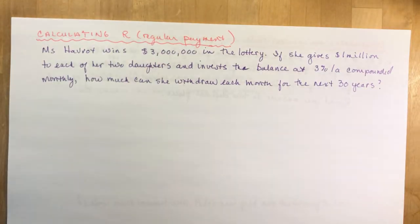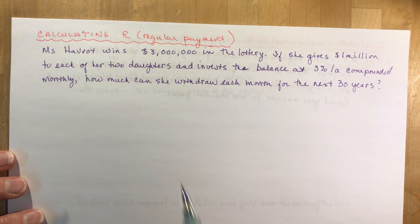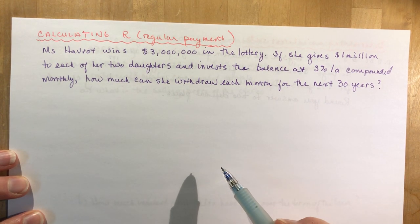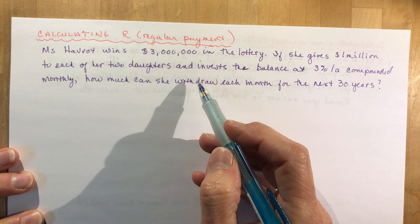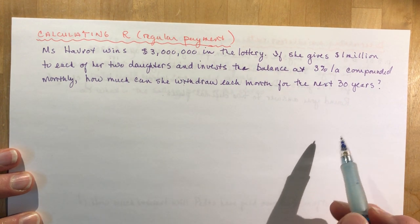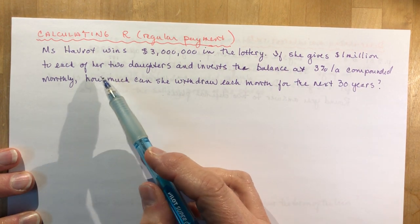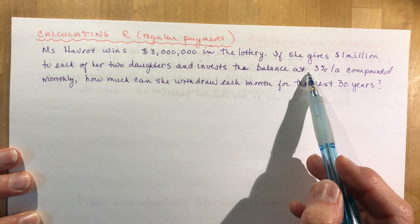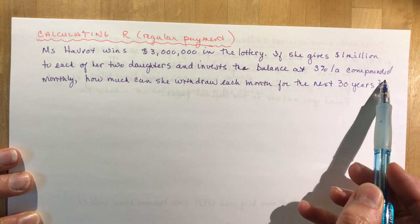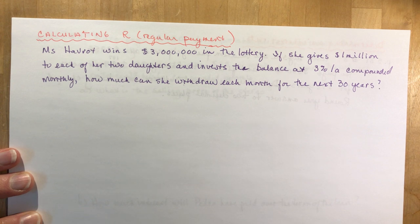Let's go on to another question, calculating regular payments. Again, Ms. Havrett wins $3 million in the lottery. If she gives a million dollars to each of her two daughters and invests the balance at 3% per annum compounded monthly, how much can she withdraw each month for the next 30 years?